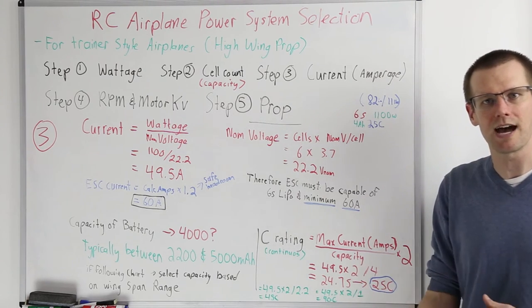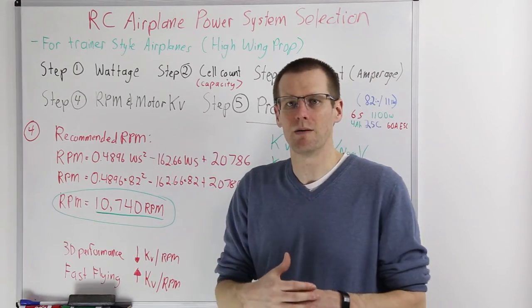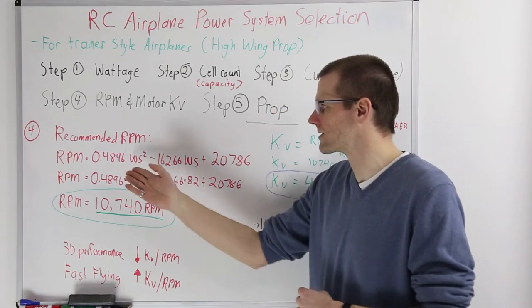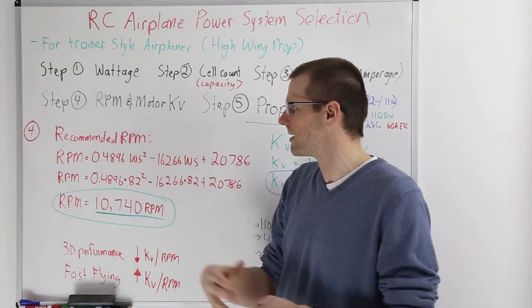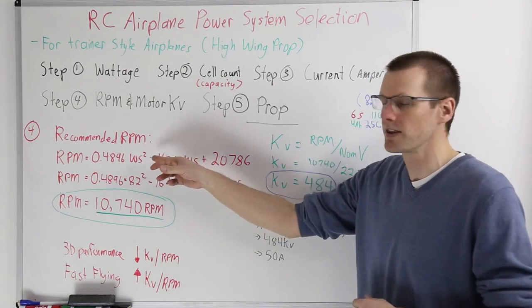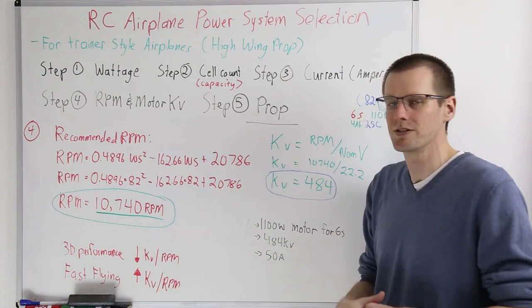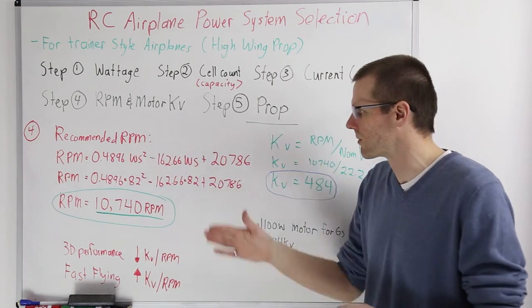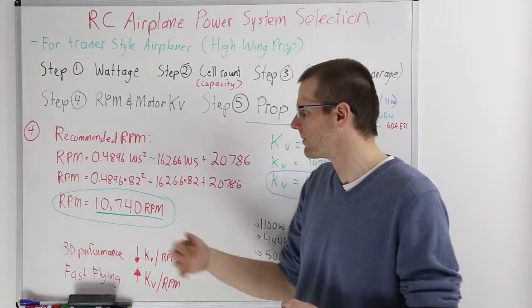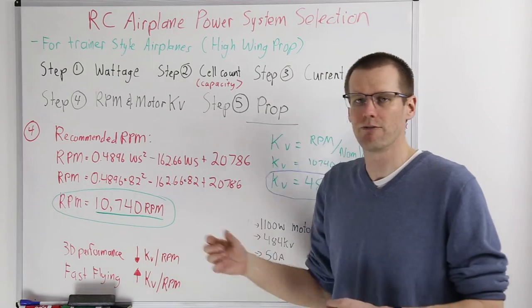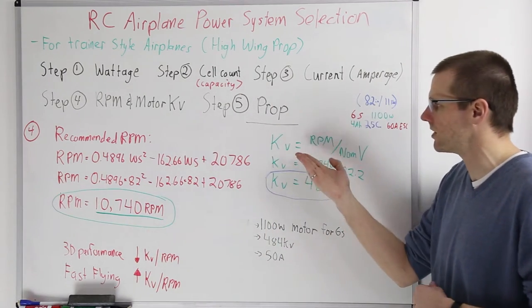Step four covers recommended RPM and the KV we can calculate from it. The Calc Sheet may help here as the formula is more complex. The formula is: RPM = 0.4896 × wingspan² − 162.66 × wingspan + 20,786. Plugging in our wingspan of 82 inches, we get a target RPM of 10,740.